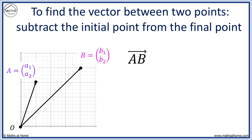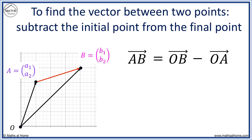The vector from point A to point B is written like so. It represents this red arrow vector going from A to B. It is equal to the vector OB minus the vector OA. OB has components B1 and B2, and OA has the components A1 and A2.